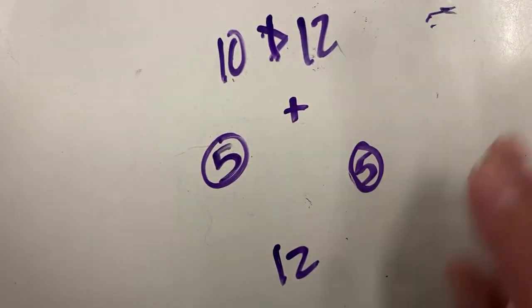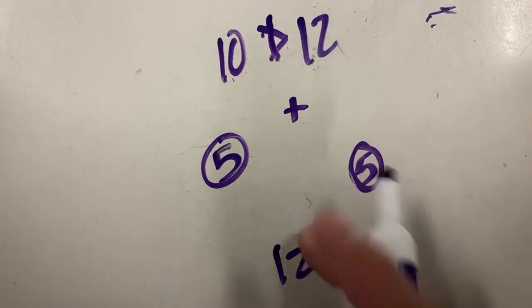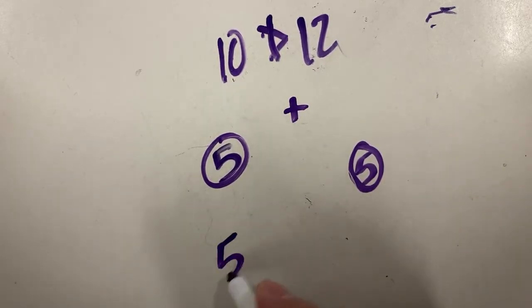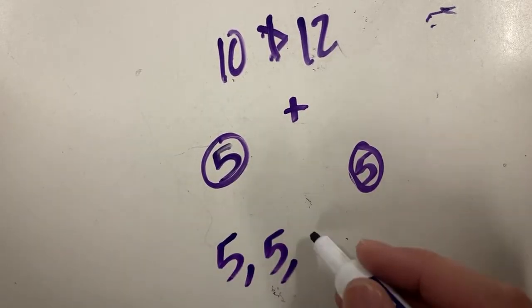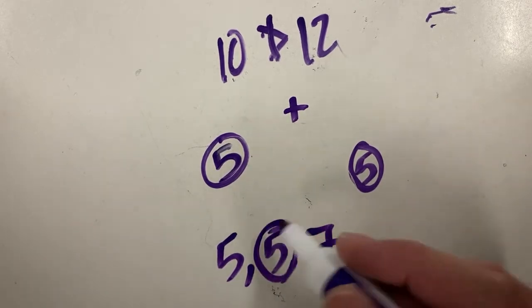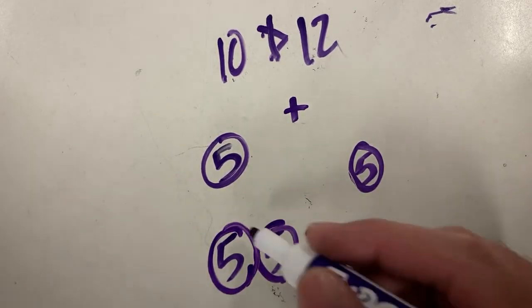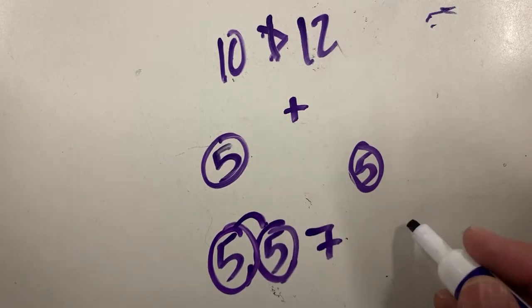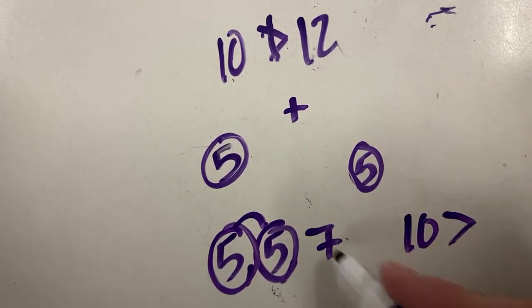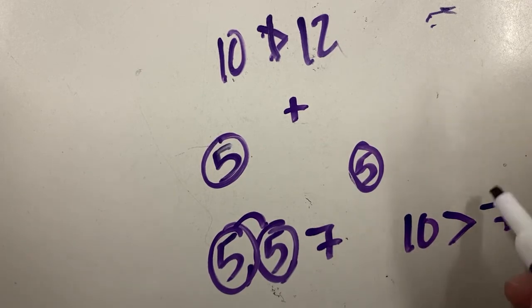So our strategy is, all we're doing is we're checking to see, 5, 5 and 7, well, we just circle the two shorter numbers, add them, and then compare it to the long side, so 10 is greater than 7, yes, that's going to make a triangle.